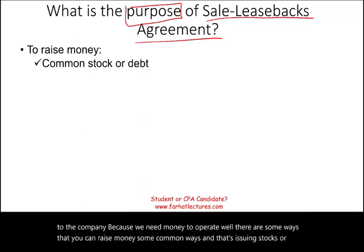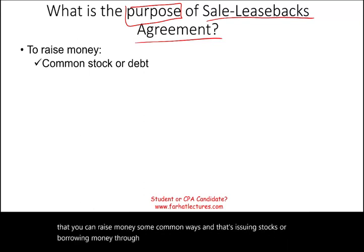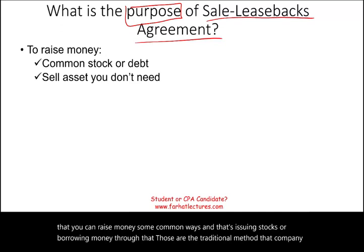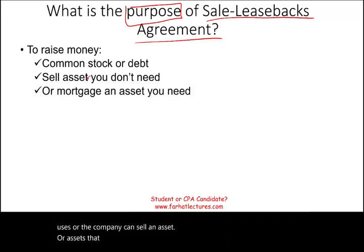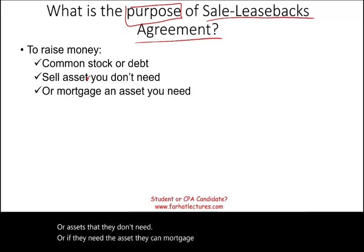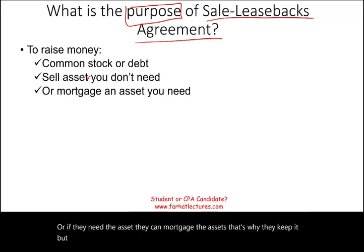Those are the traditional methods that a company uses. Or a company can sell assets that they don't need. Or if they need the asset, they can mortgage the asset — they keep it, but they mortgage it.